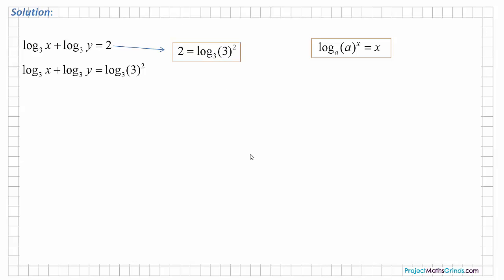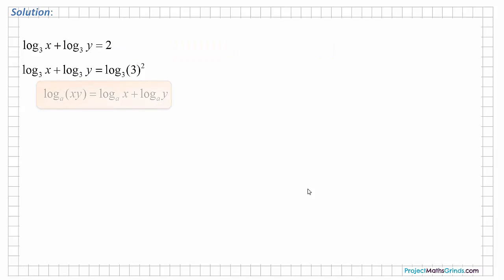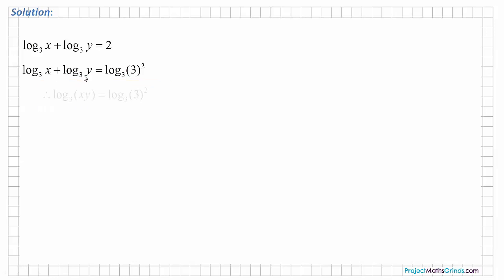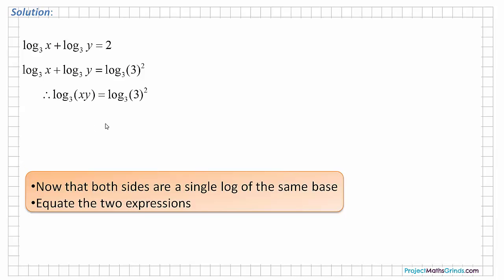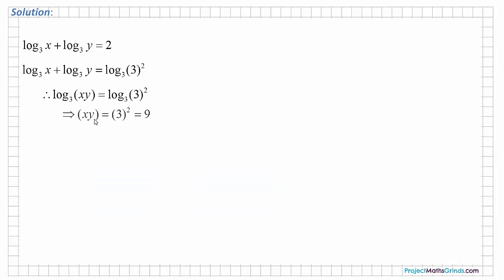So we rewrite the equation accordingly. From page 21, the log of x times y is the same as the log of x plus the log of y. So here we replace the log of x plus log of y with the log of x times y. Now that both sides are a single log of the same base, we can equate the two expressions.